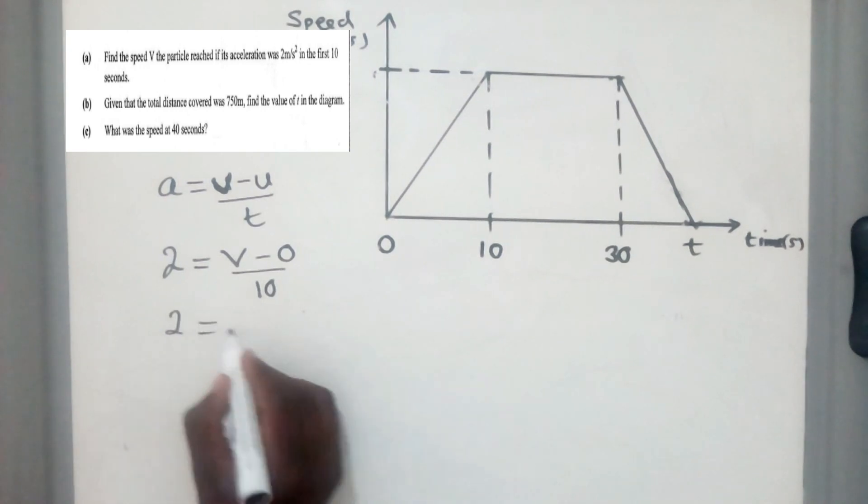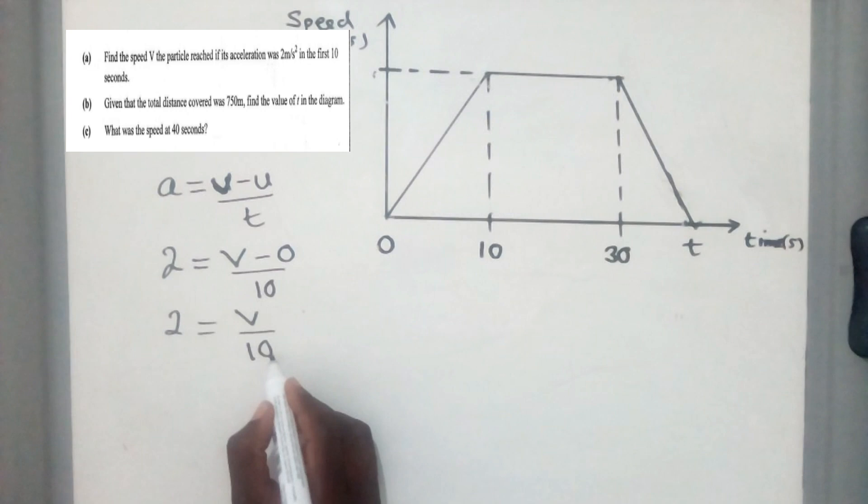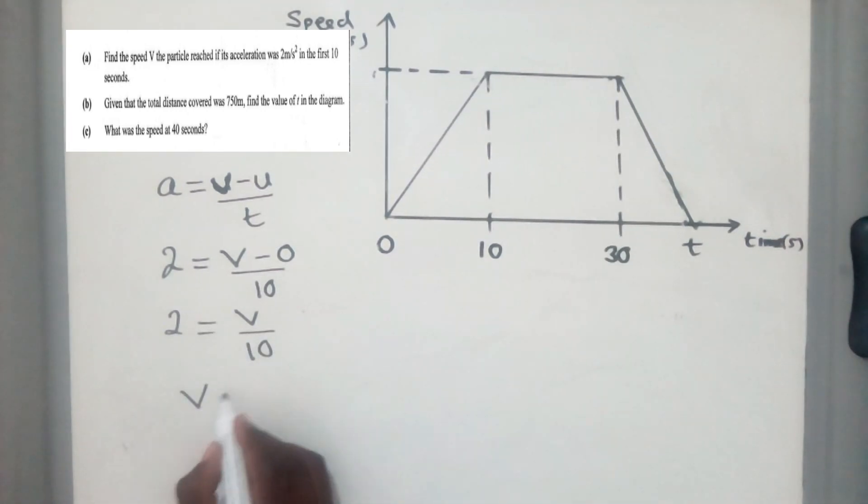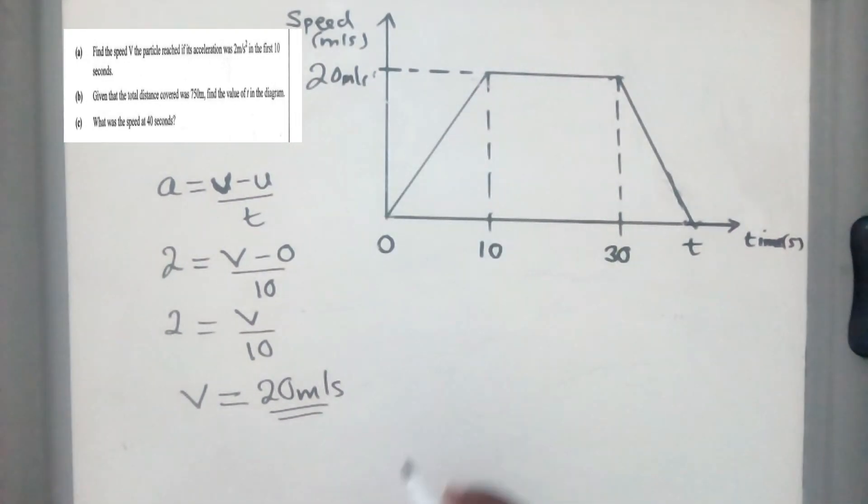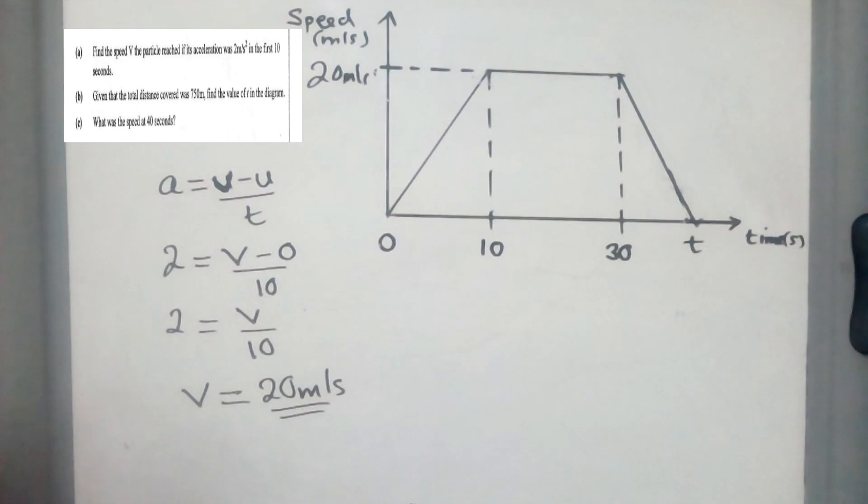So we can work out things. Here it will just be v and then 10 here. So we now cross multiply so for v. So when you cross multiply, you find that our v is equal to 20 meters per second. So here it was 20 meters per second. So now we can go to the next question.